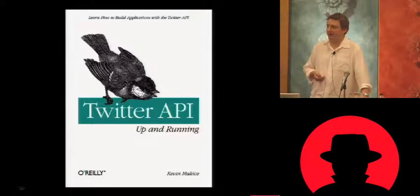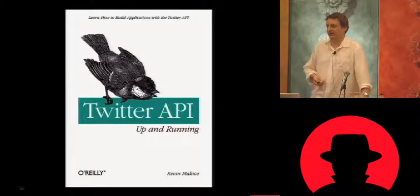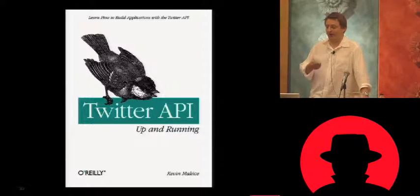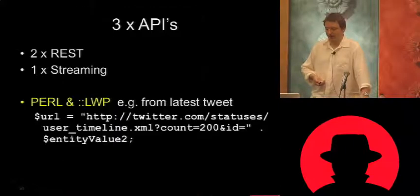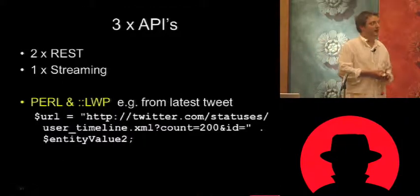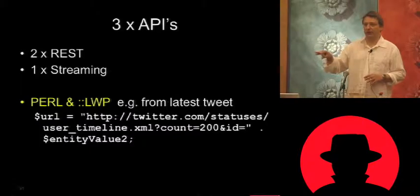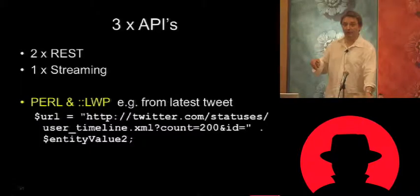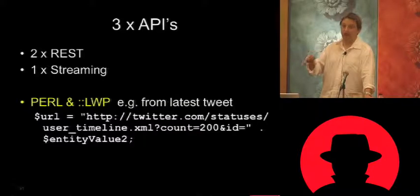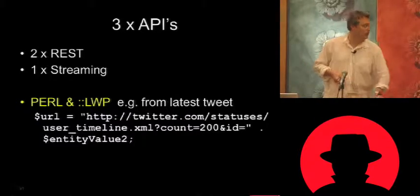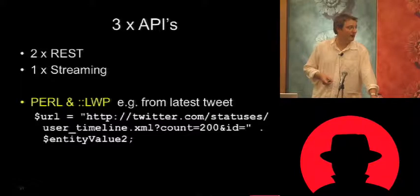So I set about trying this with Perl and looking at the Twitter API. I bought a book but didn't really use it much because there's a huge set of Twitter API documentation online. But it's not one API — it's three APIs. Forget the search API from Summarize and just focus on the other REST API, which allows you to use commands and calls to extract tweets from somebody.